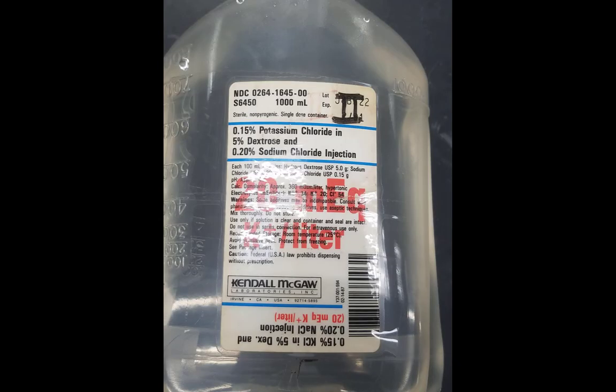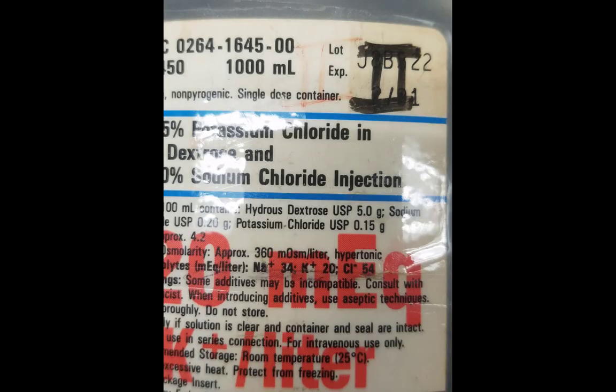Here is IV bag two. Again, the text is small and hard to read. So we blow that up. And again, you want to look at the concentration here. This bag contains sodium, potassium, and chloride. So sodium 34 milliequivalents per liter, potassium 20, chloride 54. Write those values down.